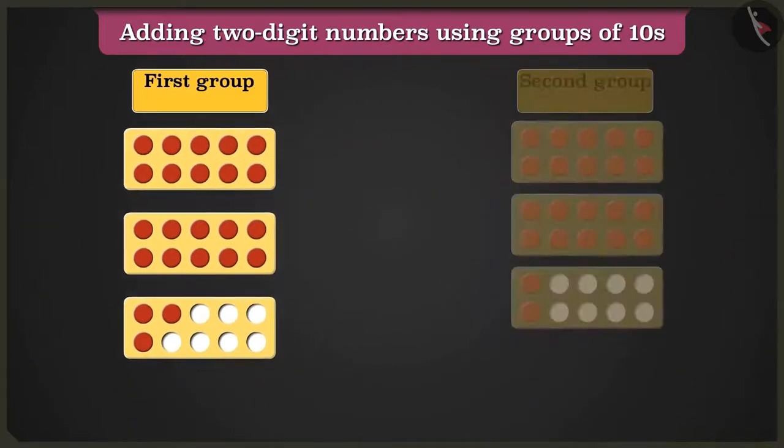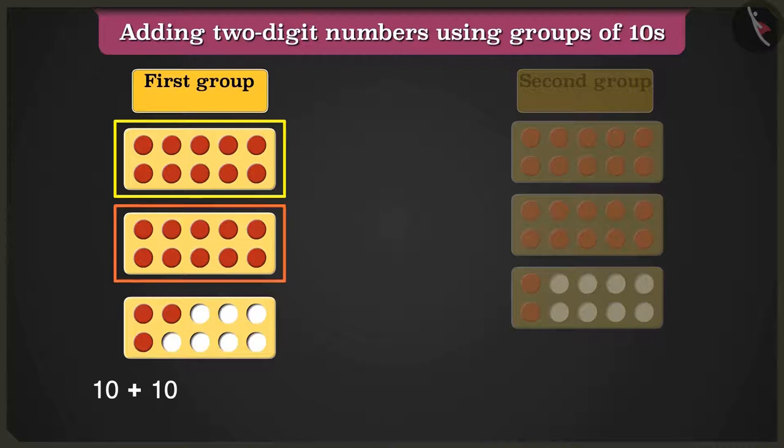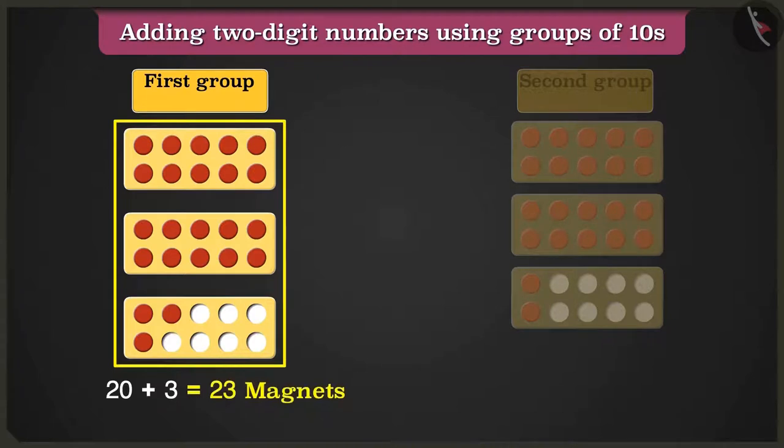In the first group of the tens frame, adding 10 and 10 makes 20. 20 plus 3 equals 23 magnets.